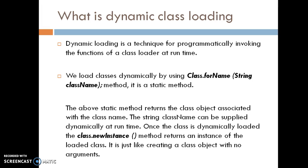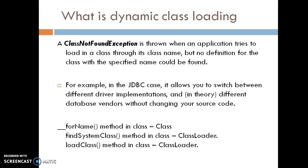In dynamic class loading, we load classes dynamically using Class.forName(), which is a static method. We supply the class name to Class.forName(), which programmatically invokes the class loaders at runtime. When we call Class.forName(), it returns the class object associated with the class name, and the class name can be supplied dynamically at runtime. Once the class is loaded, Class.newInstance() returns an instance of the loaded class, similar to creating an object using the new operator.